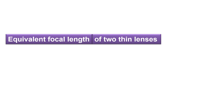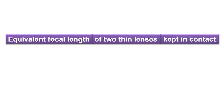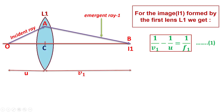We will find the equivalent focal length of two thin lenses kept in contact with each other. Suppose there is a lens L1. There is an object kept on the left-hand side of lens L1. An incident ray coming from the object hits the left-hand surface of lens L1. Bending action due to refraction takes place, producing emergent ray 1, which forms image I1 at point B on the principal axis.